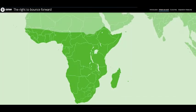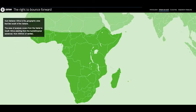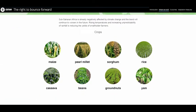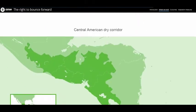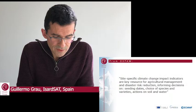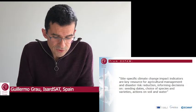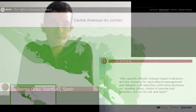In the words of Oxfam, site-specific climate change impact indicators are a key resource for agricultural management and disaster risk reduction, informing decisions on seeding dates, choice of species and varieties, and actions on soil and water.